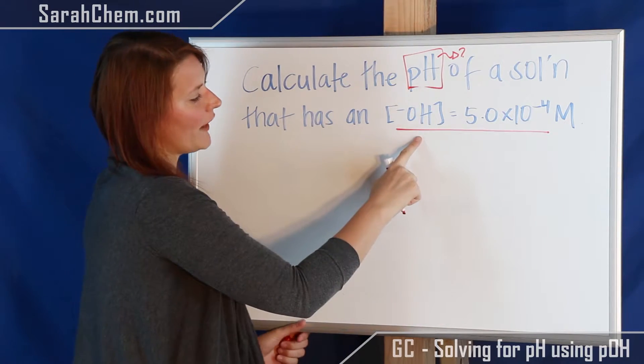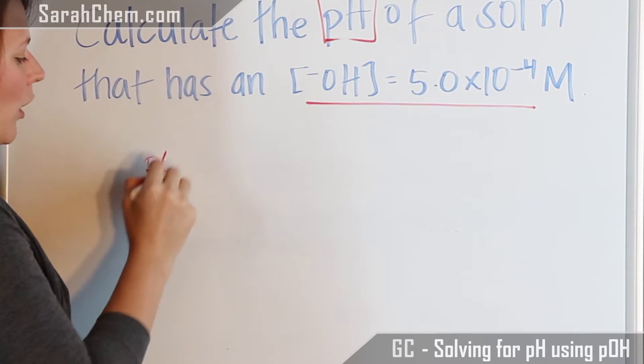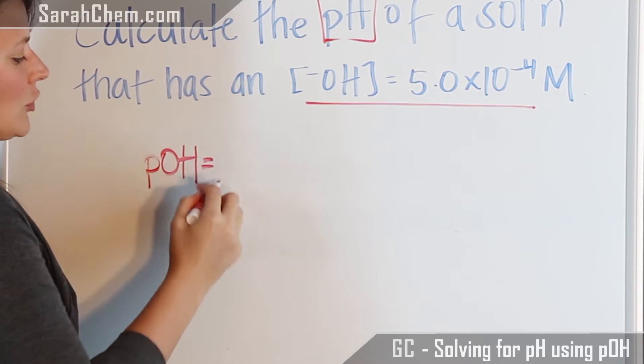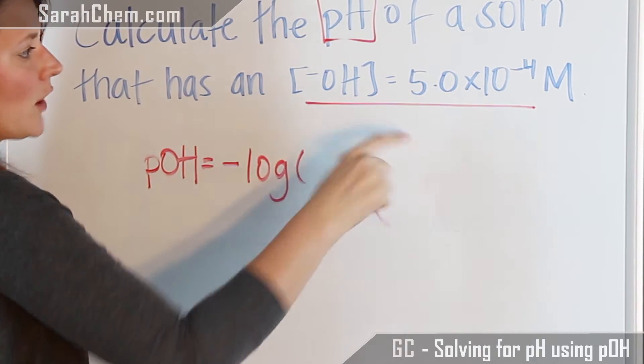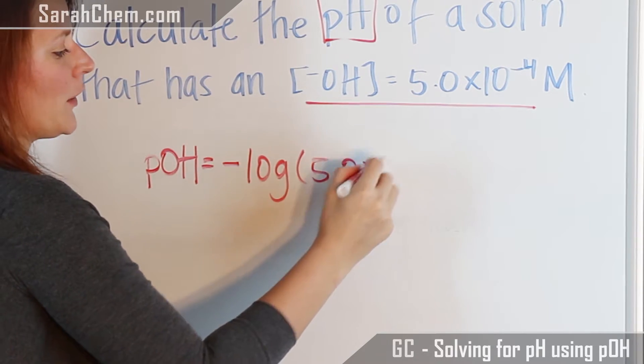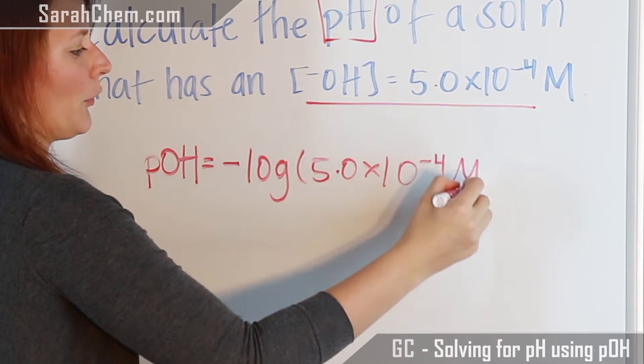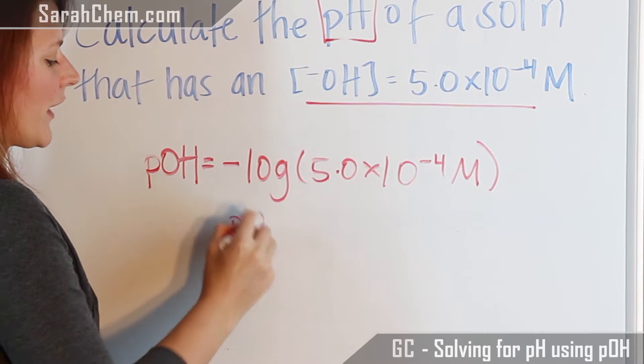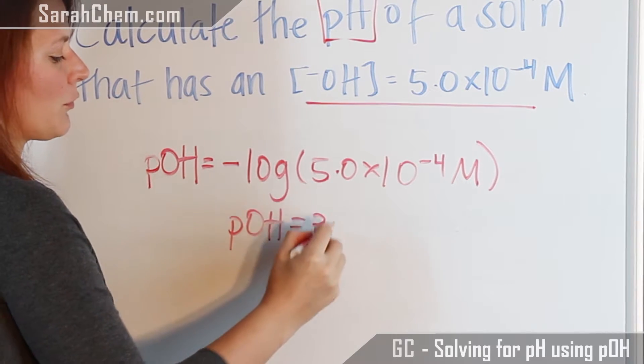So we know that if we have the hydroxide concentration, we are able to solve for the pOH, which would be the negative log of the concentration we are given, 5.0 times 10 to the minus 4 molar. And if we solve that, we get that the pOH is equal to 3.30.